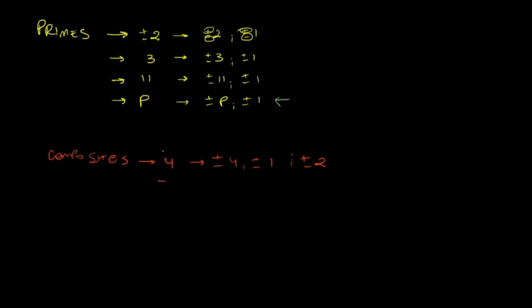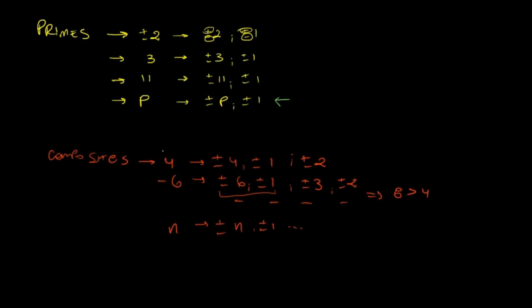Another example: −6 has ±6 and ±1, which is common for every number — every n will always have ±n and ±1. But 6 also has ±3 and ±2, giving us 1, 2, 3, 4 pairs — times 2 for ±, that's 8 divisors, which is more than 4. So 4 has 6 divisors (greater than 4), and is therefore a composite number.